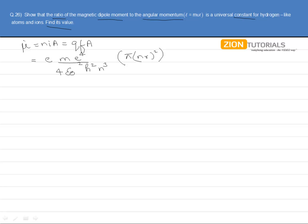So in a way you can form the dipole moment formula, and then we can have simply the angular momentum MVR, which is actually NH/2π as we know.